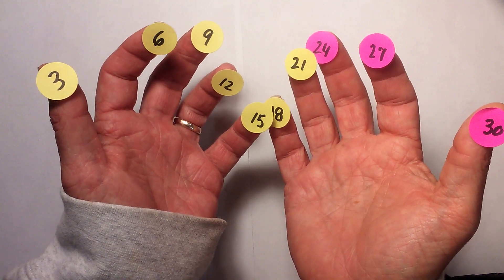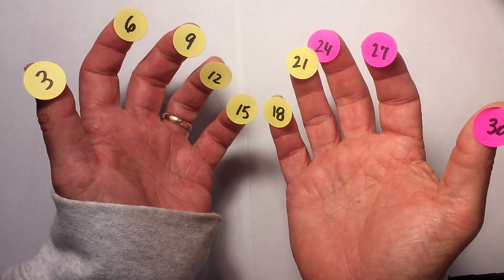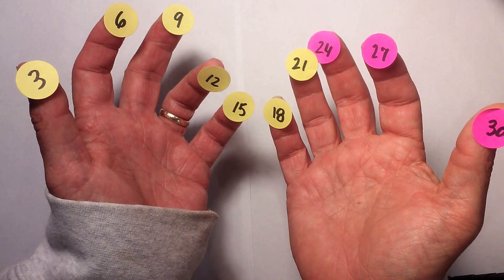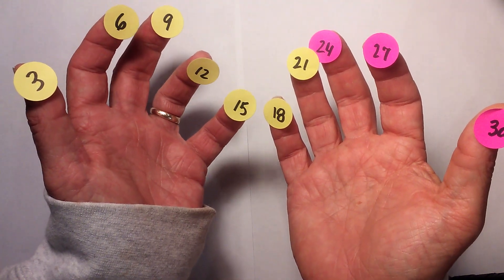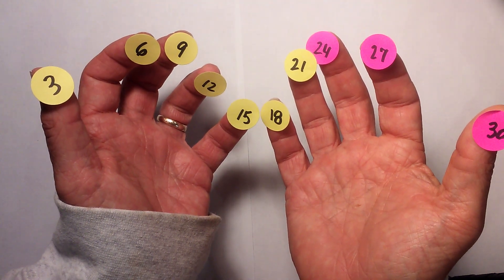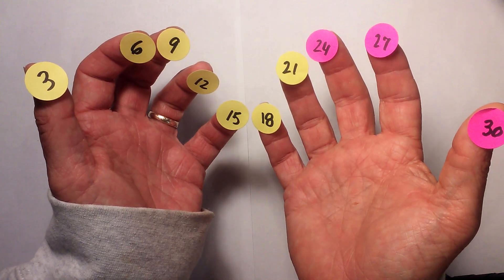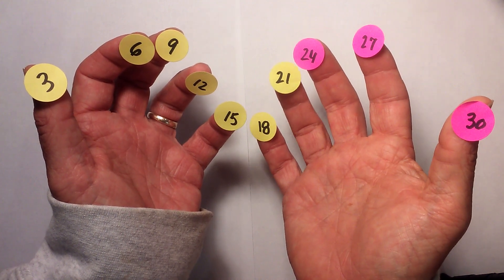6 plus 3 is 9, 9 plus 3 is 12. I already know the pinky is going to be 15. 15 plus 3 is 18. I can do 18 plus 3 is 21 in my head.